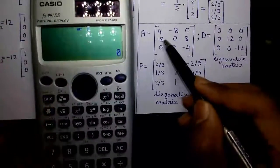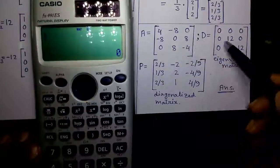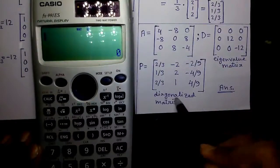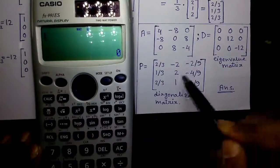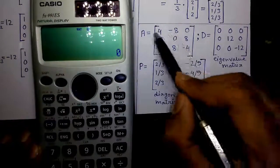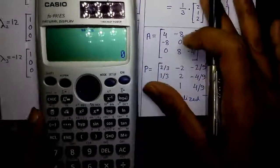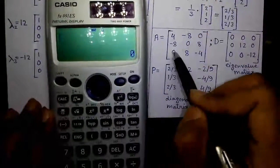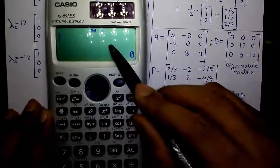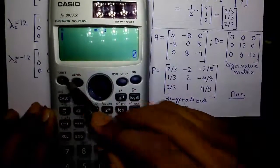At the end of the previous video, we got three matrices. Where this matrix P is the diagonalized matrix and this matrix D is the eigenvalue matrix, and this is our original A matrix. I have already entered these three matrices on this calculator. Let me show you them one by one.